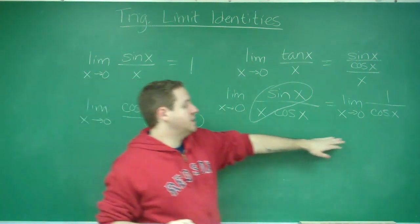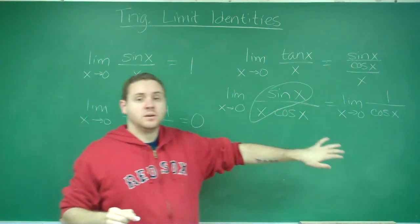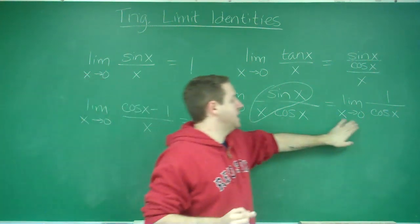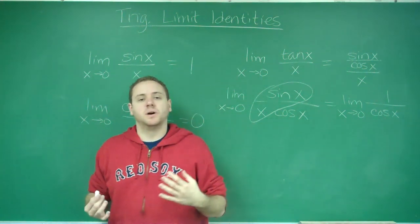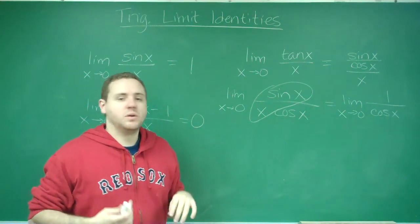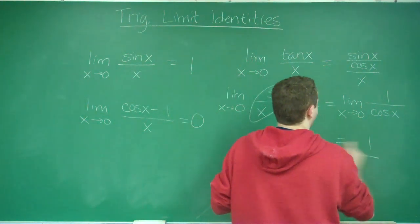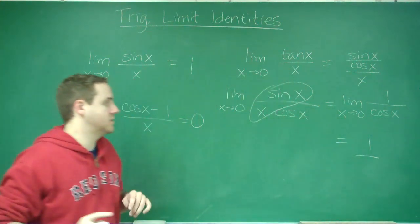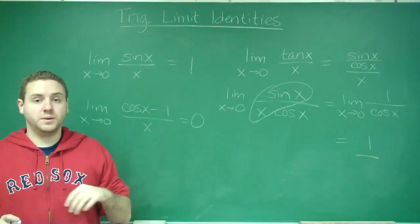Now, cosine of 0 is 1. Because now we can just use direct substitution because we have no discontinuities anywhere. Cosine of 0 is 1. You get 1 over 1. So, you get 1 again. So, the limit of tan x over x is also 1.